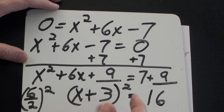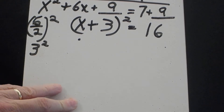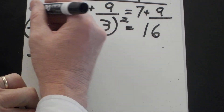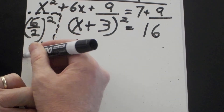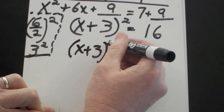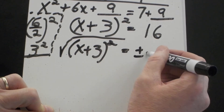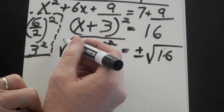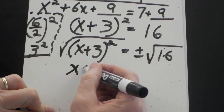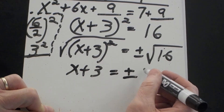Now I need to get rid of the square. I take the square root of both sides: the square root of (x + 3) squared equals plus or minus the square root of 16. The square root and the square are inverse operations and cancel out, leaving x plus 3 equals plus or minus 4, since the square root of 16 is 4.